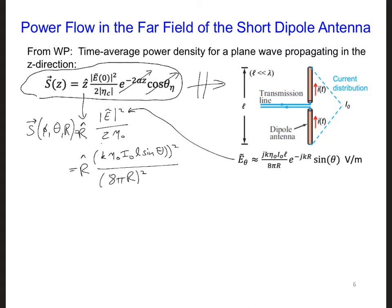So this is a phase term, so I left that out. And also, the magnitude of j is 1. Let's simplify this expression.